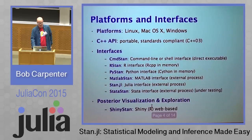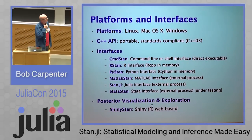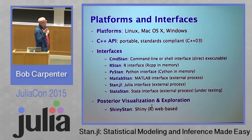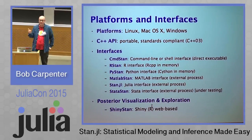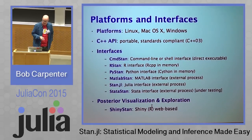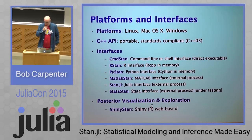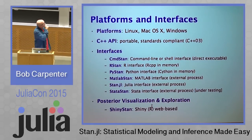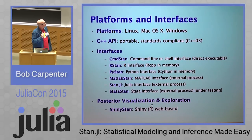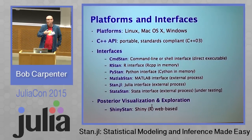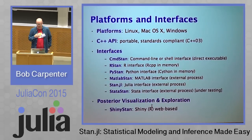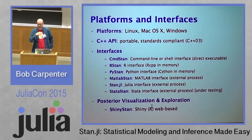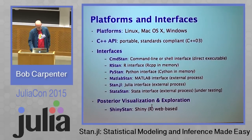It's an easily extensible general language that's portable across platforms. The underlying thing is written in C++, but it runs on all different platforms. We have interfaces for R, Python, MATLAB, Stata, and now Julia. We also have a really cool posterior visualization and exploration tool called ShinyStan, which is something you could borrow and implement for yourselves in Julia because it's written in Shiny, which is very much like Escher.